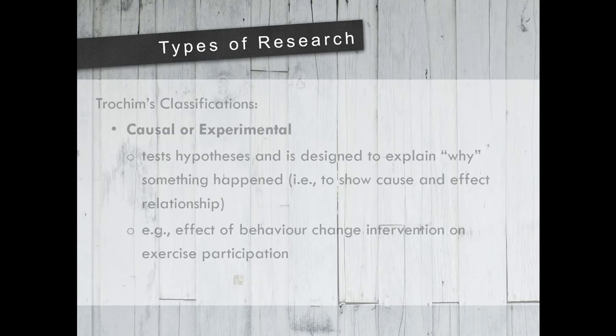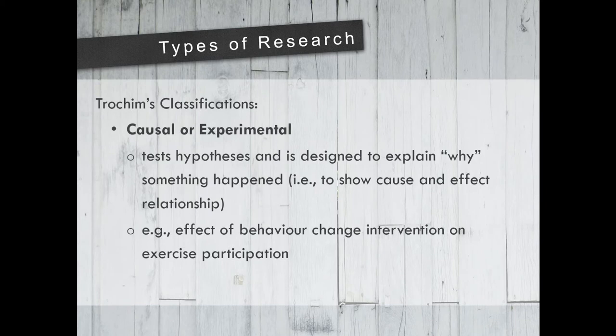The next type of research is causal or experimental. This type of research tests hypotheses and is designed to explain why something happened, showing cause and effect relationships. Hypotheses are simply statements that can be tested by scientific research. An example would be the effect of a behavior change intervention on exercise participation — if you are lazy, that is your behavior, what could be the effect on your exercise participation?